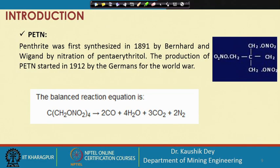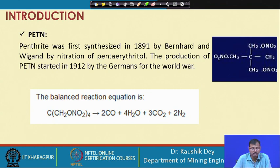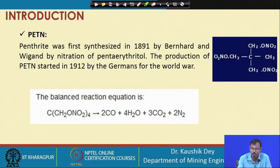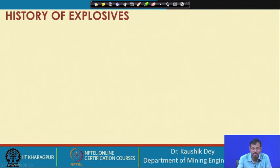The next explosive is pentaerythritol tetranitrate — PETN. PETN has a carbon chain with four CH₂ONO₂ arms. It was synthesized in 1891 and started as a military explosive during the Second World War. Later, PETN, along with TNT, began to be used in mining as an accessory explosive, with properties similar to TNT.